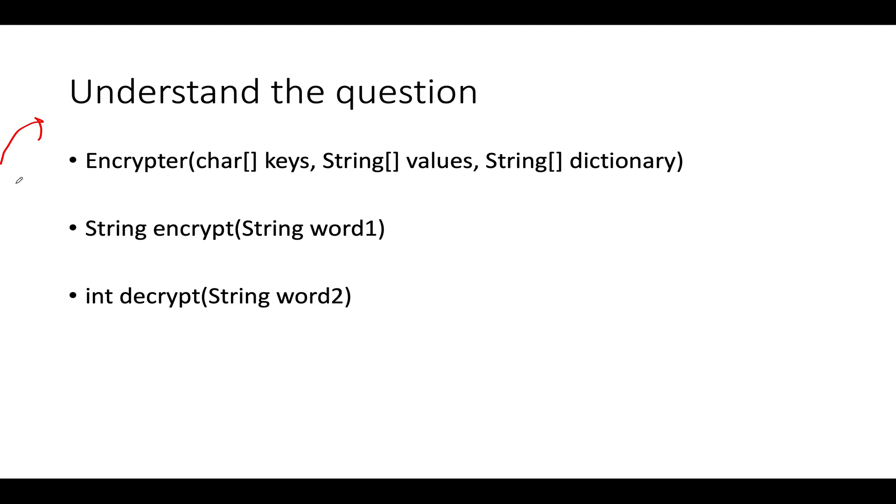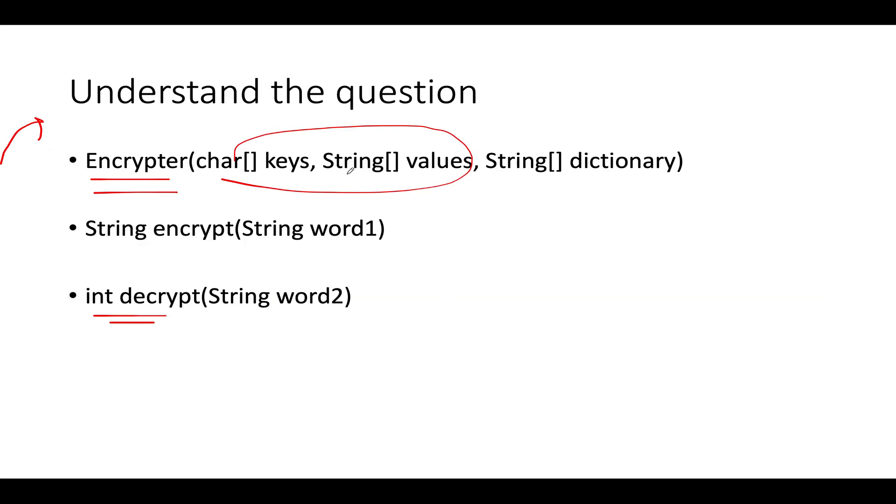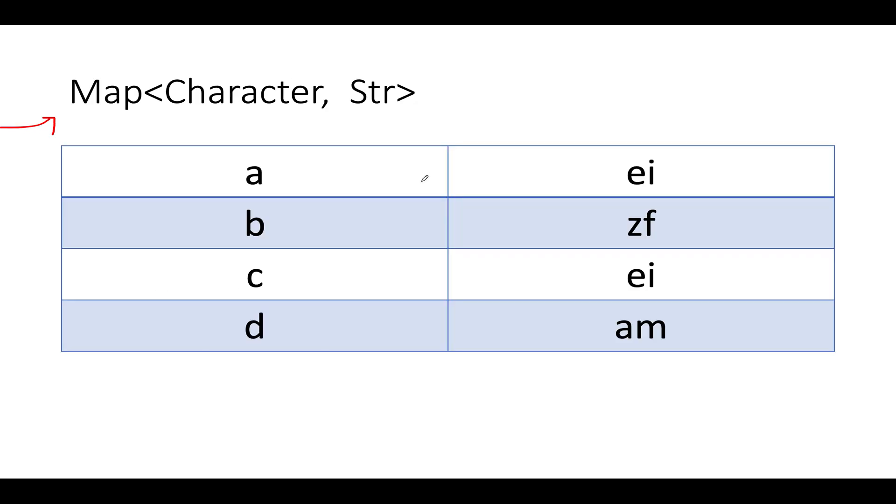Let's start for understanding the question first. Here we need to define three helper methods: encrypt the string, decrypt the string, and return the possible count value. The first hint that we got was to create a map using these keys and values, so I'll be doing the same thing. I have created a character to string map and I'll iterate through these two arrays and generate a map using it.